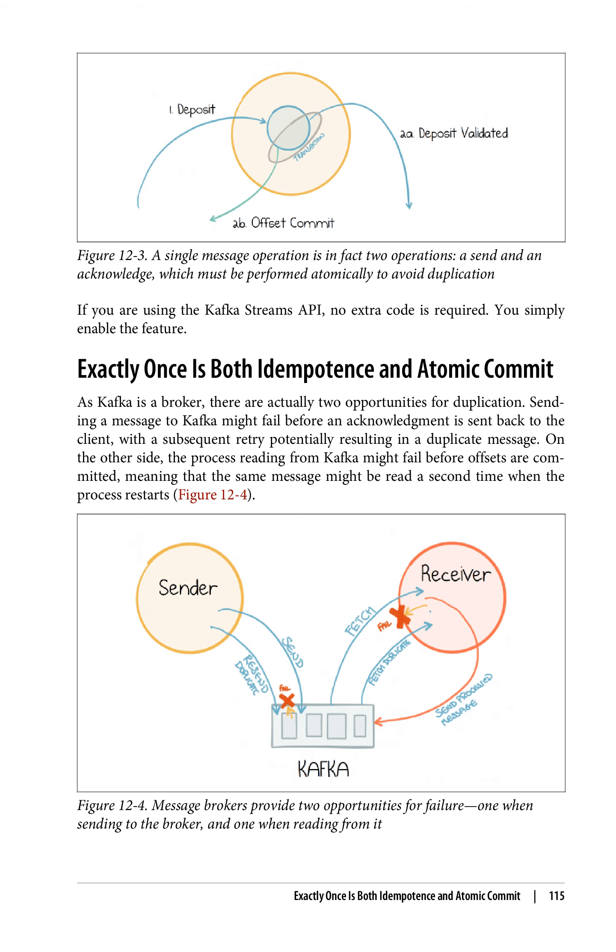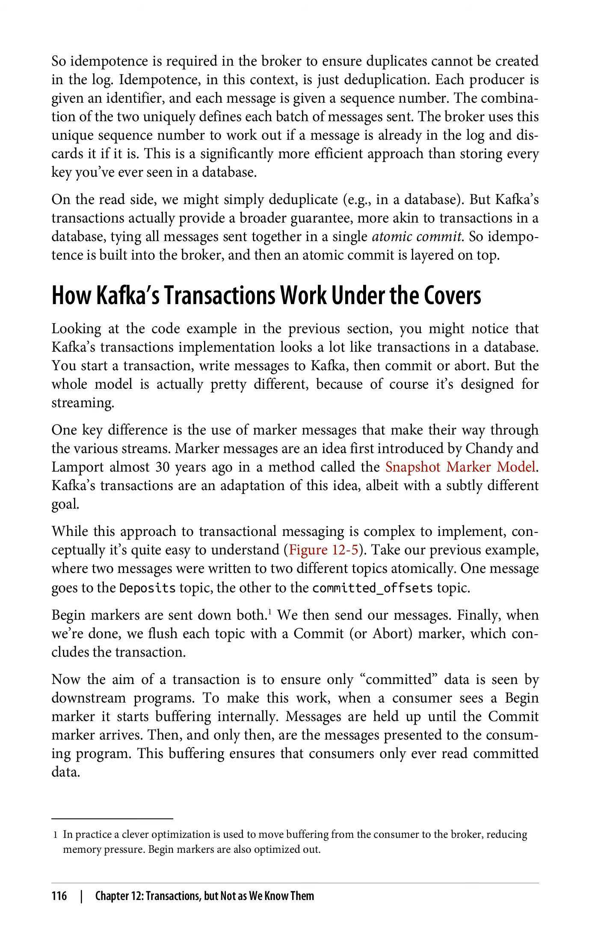Exactly-once is both idempotence and atomic commit. As Kafka is a broker, there are actually two opportunities for duplication. Sending a message to Kafka might fail before an acknowledgement is sent back to the client, with a subsequent retry potentially resulting in a duplicate message. On the other side, the process reading from Kafka might fail before offsets are committed, meaning that the same message might be read a second time when the process restarts (figure 12-4). So idempotence is required in the broker to ensure duplicates cannot be created in the log. Each producer is given an identifier, and each message is given a sequence number. The combination of the two uniquely defines each batch of messages sent. The broker uses this unique sequence number to work out if a message is already in the log and discards it if it is.